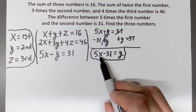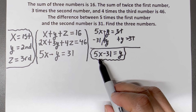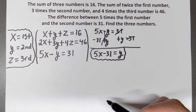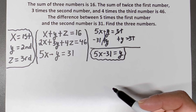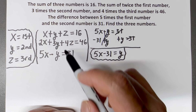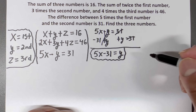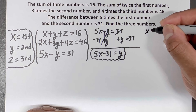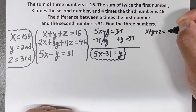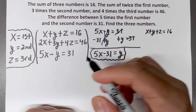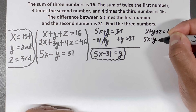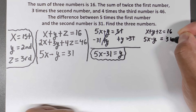Now I'm going to take two equations and try to isolate the other variable, z. The two lines I'm going to work with are the first and the third. The first line says x plus y plus z equals 16, and the third line says 5x minus y equals 31.